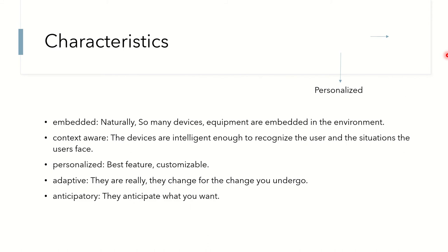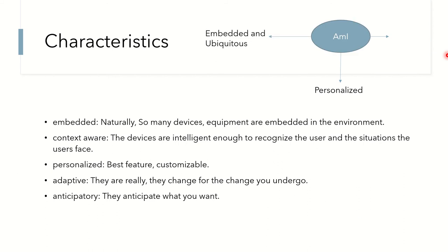Now, what are the characteristics of ambient intelligence systems? The first one is being embedded and ubiquitous. When technologies are connected together, there will be a lot of equipment and devices connected, and it has to be ubiquitous — it can be accessed and controlled from anywhere.